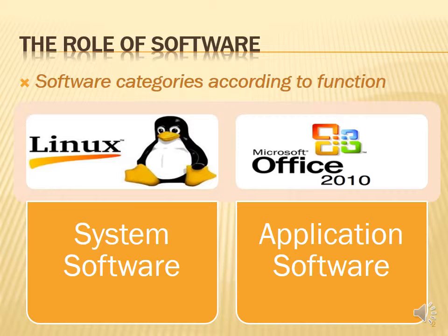System software is used to make sure that the computer can work. Examples of system software would be the Windows operating system — Windows 7, Windows 8, Windows 10 — or it could be open source software like Linux or Ubuntu, which is also used to run a computer.